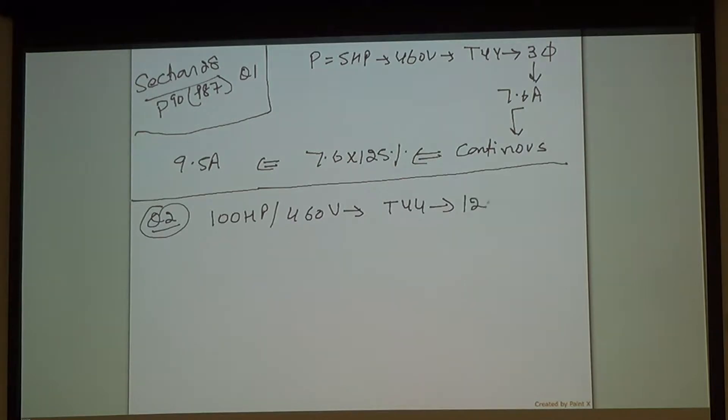It's 124 amps. Because it's non-continuous, we are going to go to table 27. When we went to table 27, what did you multiply 124 with? 0.9. Why? Because of the duty cycle.